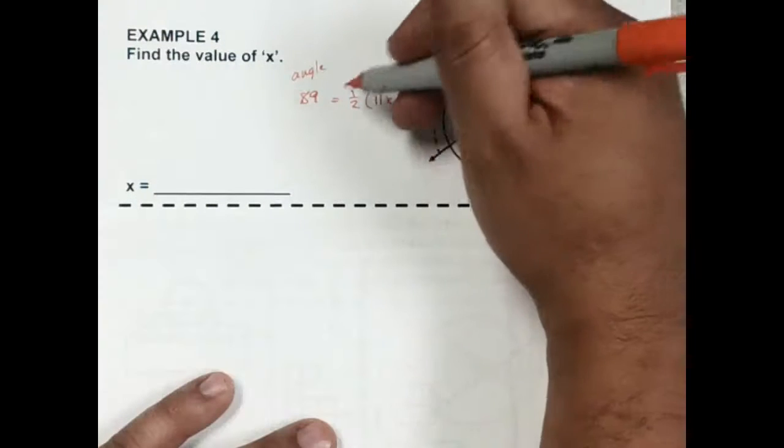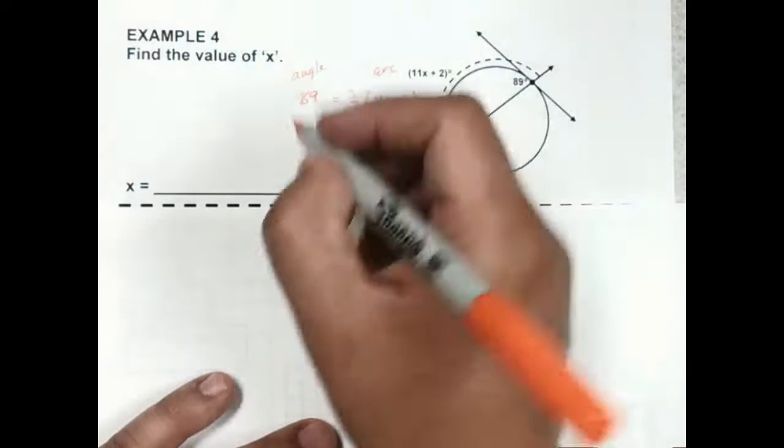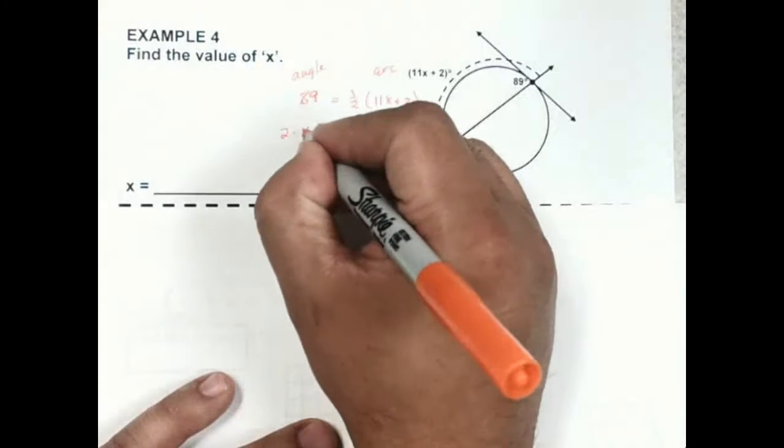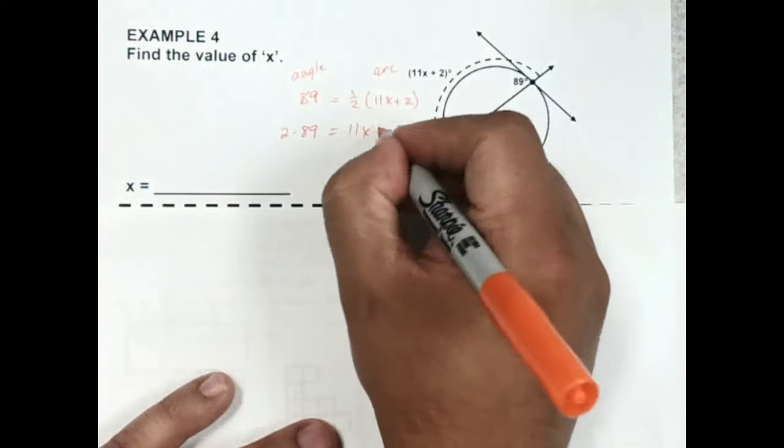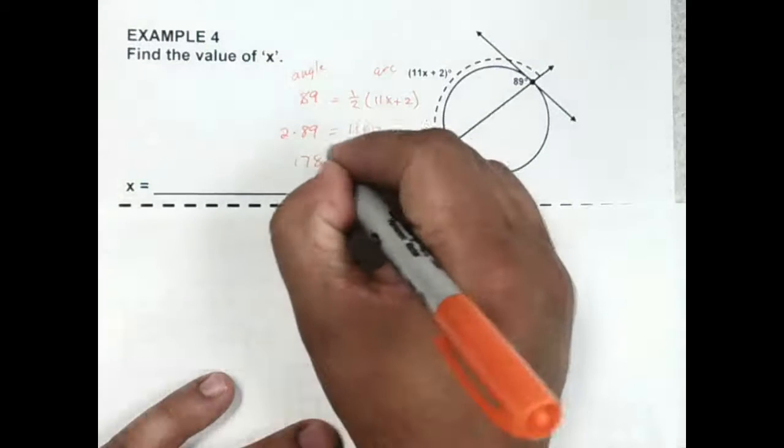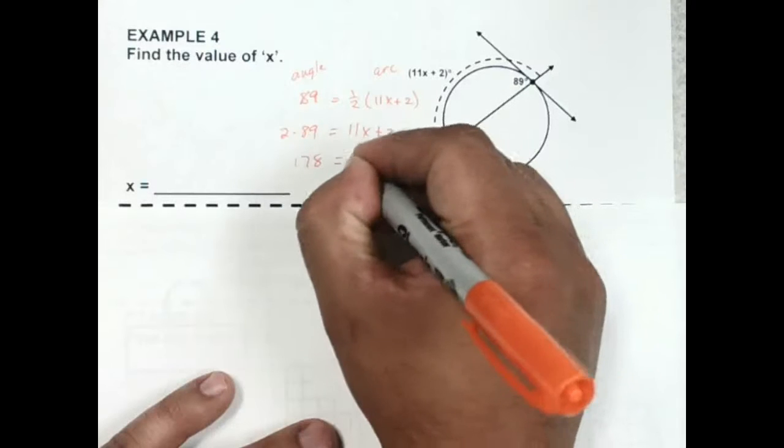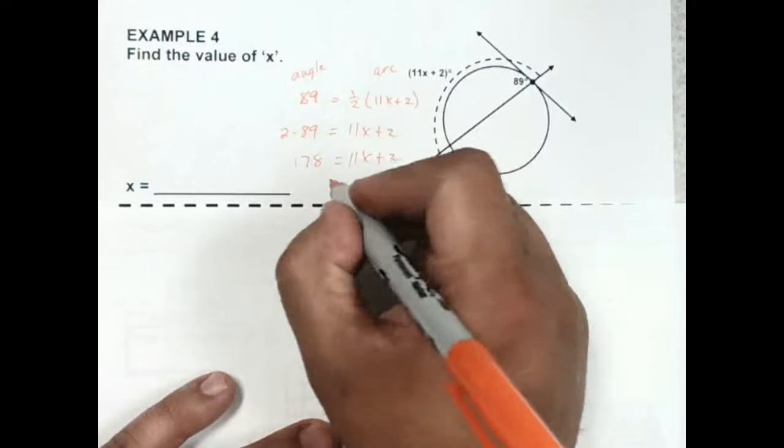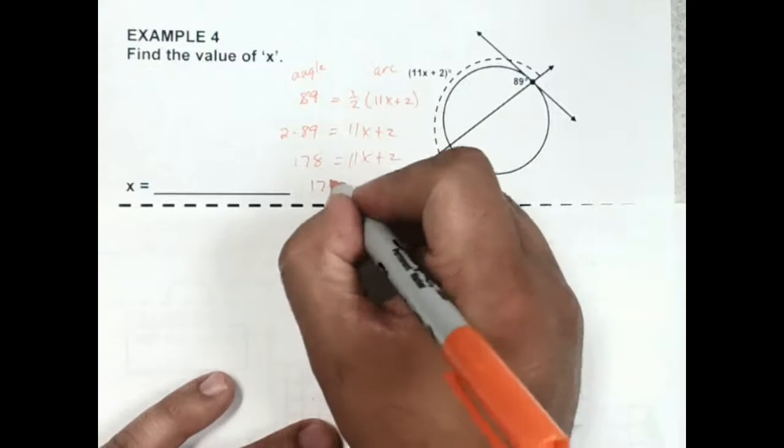So I need to get rid of this half, which means I have to double both sides. So 2 times 89 is equal to 11x plus 2. And 2 times 89 is going to be 178. If I subtract 2 from both sides, I get 176.